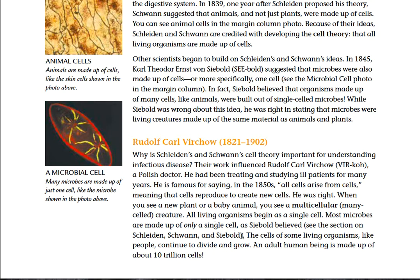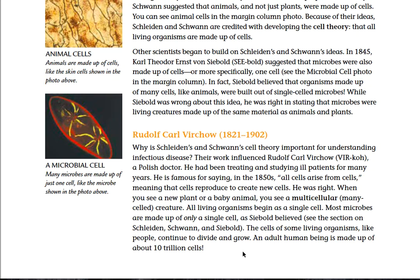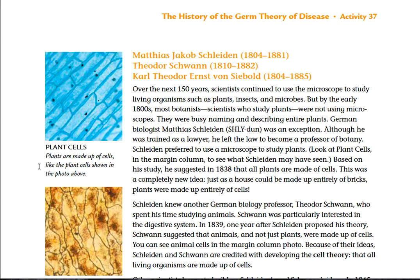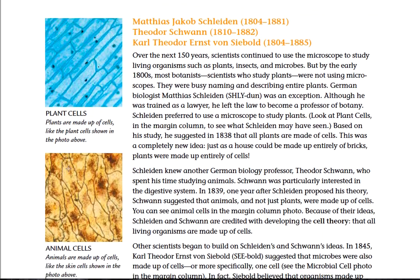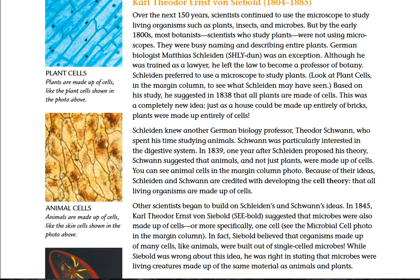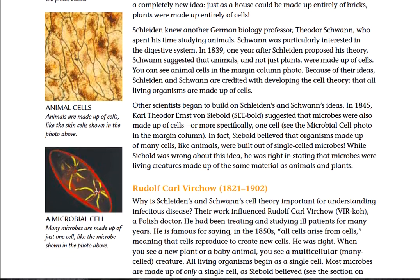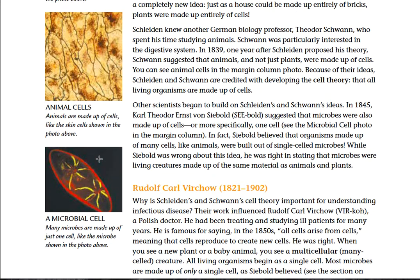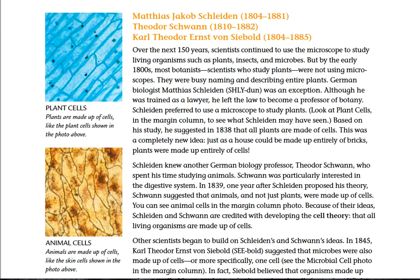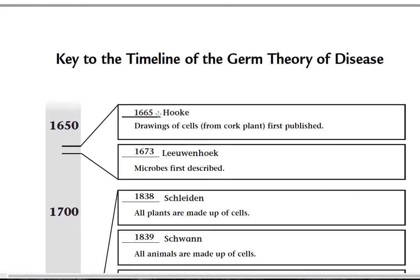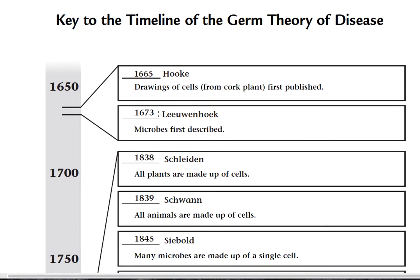The cells of some organisms, like people, continue to divide and grow — an adult human being is made up of about 10 trillion cells. Plants are made up of cells, animals are made up of cells, and many microbes are made up of just one cell. Back to our timeline: Schleiden — all plants are made of cells; Schwann — all animals are made of cells; and Siebold — many microbes are made up of a single cell. Go ahead and fill out your timeline.